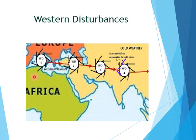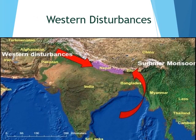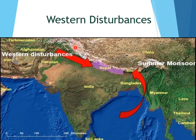These westerly depressions originate in the Mediterranean Sea and are carried eastward by the jet stream. After crossing Iraq, Afghanistan, and Pakistan, they enter the Indian subcontinent. These depressions are obstructed by the Himalayas, bringing rainfall in Punjab and Haryana, and snowfall in Jammu and Kashmir. They are also known as temperate cyclones, as they originate in the temperate zone between 27 degrees north to 35 degrees north latitude.